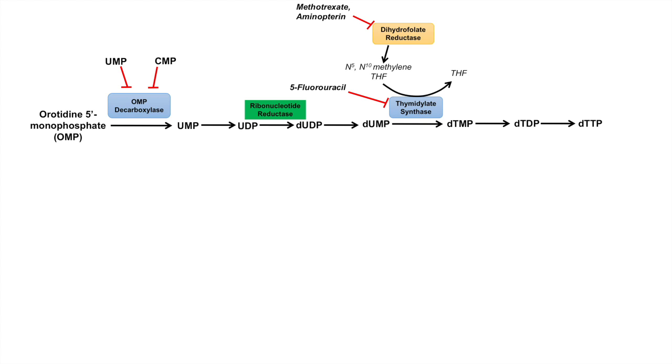Going all the way back to near the beginning of the pathway, UDP can actually be converted in a different side reaction to UTP. It can be converted to UTP instead of dUDP. Remember, the D stands for deoxy, such as deoxyribonucleic acid or DNA. Instead of DNA, it can be actually produced into RNA. So that's why this is the side pathway for RNA production.